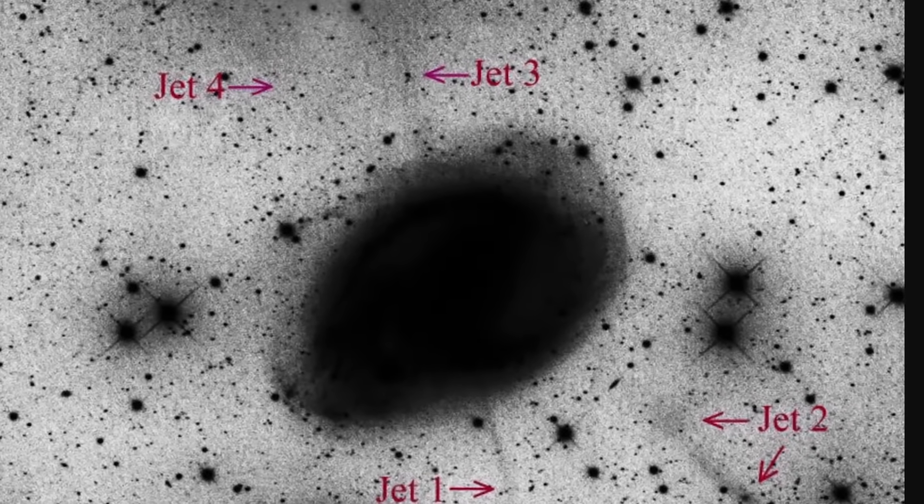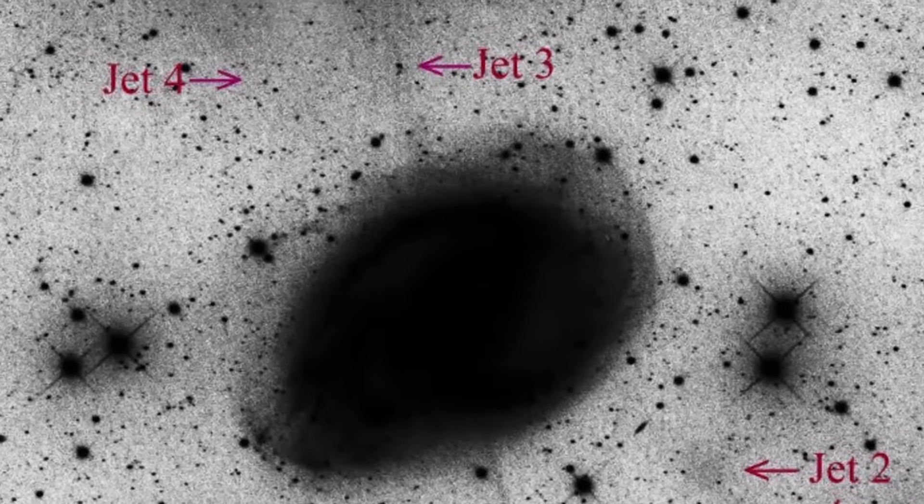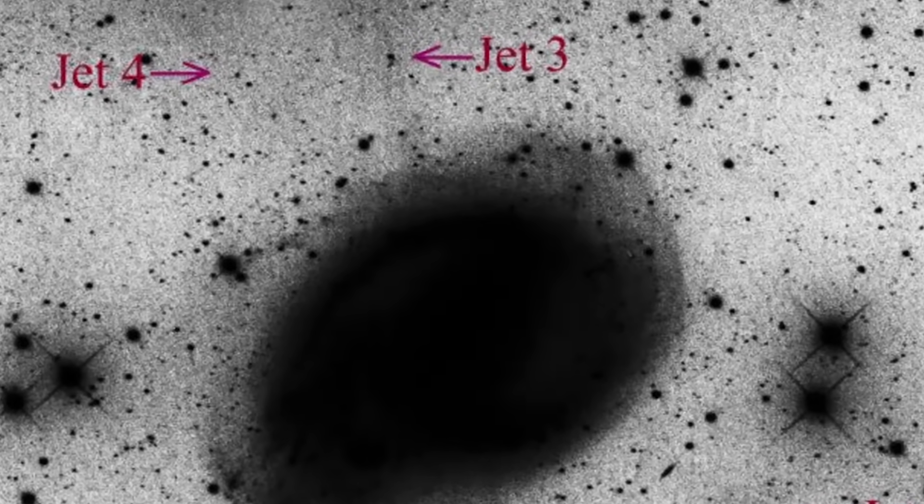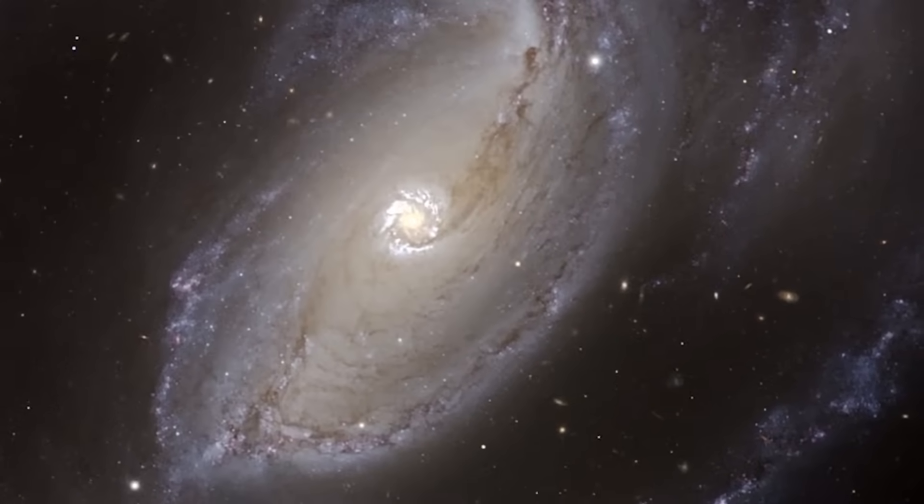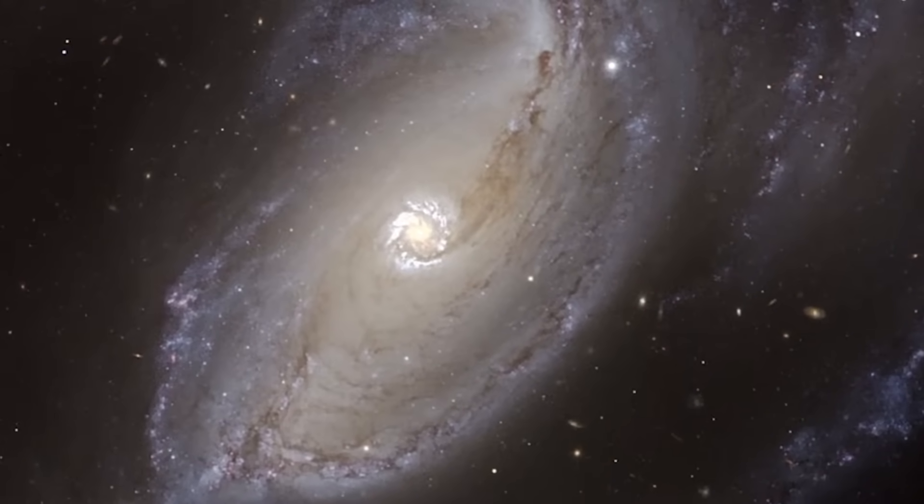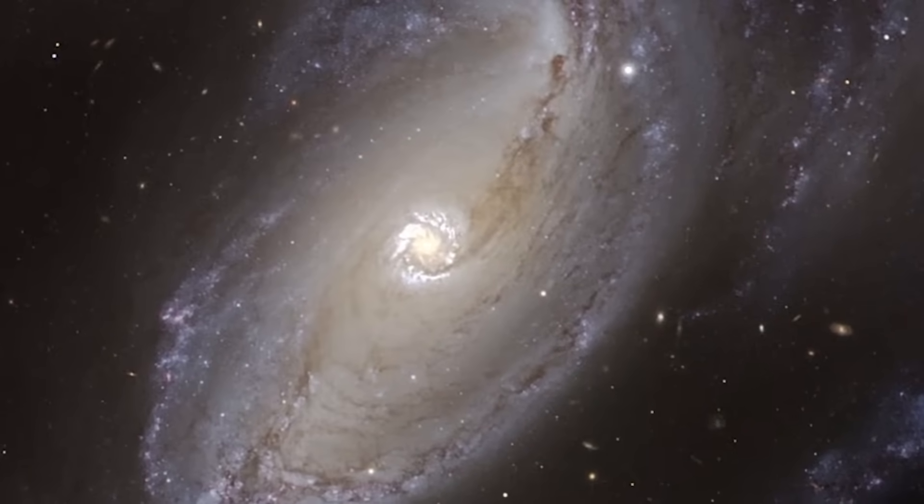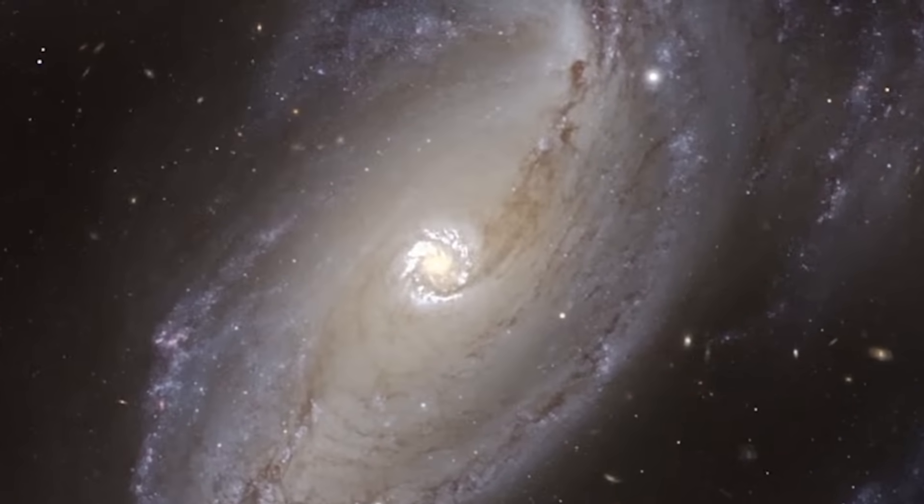But naturally, because this is an active galaxy, there also has to be some kind of a massive black hole on the inside. And in this case it seems to possess a black hole that's approximately 140 million times the mass of our sun, or something that's over 30 times more massive than the one in the middle of the Milky Way galaxy.